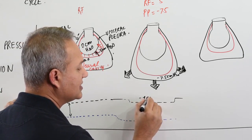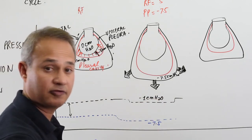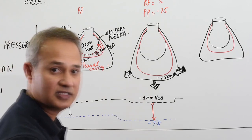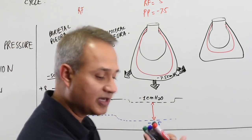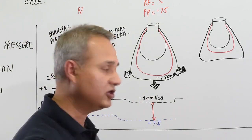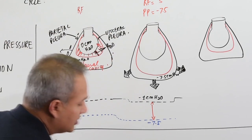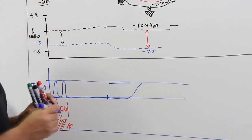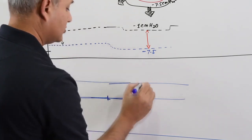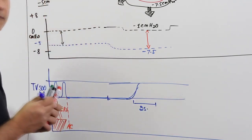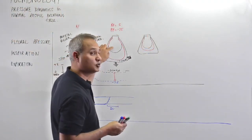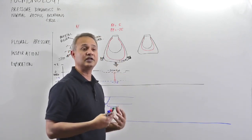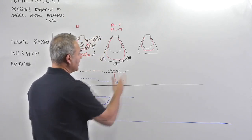The alveolar pressure changes by only a small amount — it goes to minus one centimeter of water. The pleural pressure went to about minus seven point five to minus eight, while the alveolar pressure reduced slightly. The transpulmonary pressure is now about minus six point five centimeters of water, pulling the lungs outward and opening the alveoli. Over about two seconds, this draws in roughly 500 mL of air — the tidal volume.